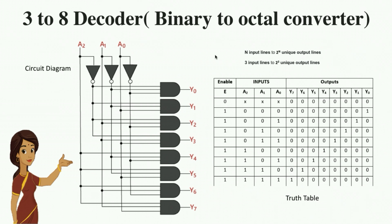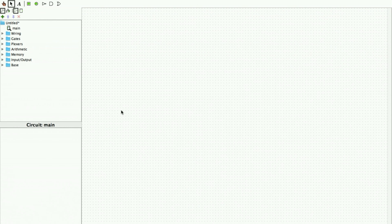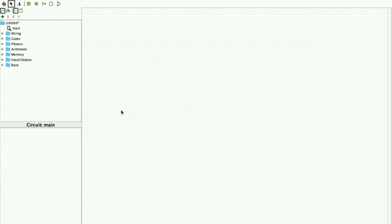Now let us see a 3-to-8 binary decoder, which is a binary-to-octal converter. There are 3 input lines converted to 2^3 which is 8 output lines. This is the circuit diagram and truth table. Now we will implement the 3-to-8 decoder using Logisim.